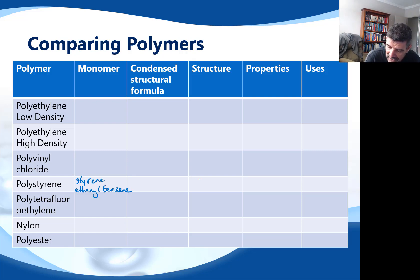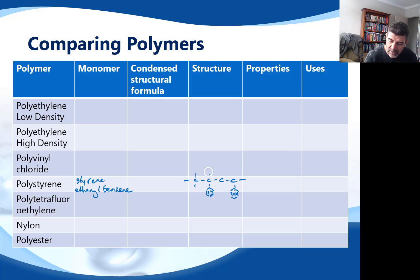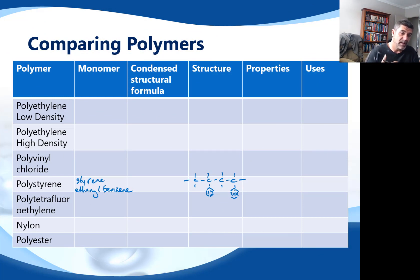When drawing the structure, every second carbon will have one of these rings on it. However you want to draw that — with double bonds showing or with rings — is fine, as long as you are able to explain it and make sure that each of these bonds is shown. You can use simplified diagrams to explain the structure of these polymers and therefore relate them to the properties and uses. Keep going with your table, keep filling it in, and hopefully before long you'll have a full table with all of these key polymers in it. Thanks for watching.